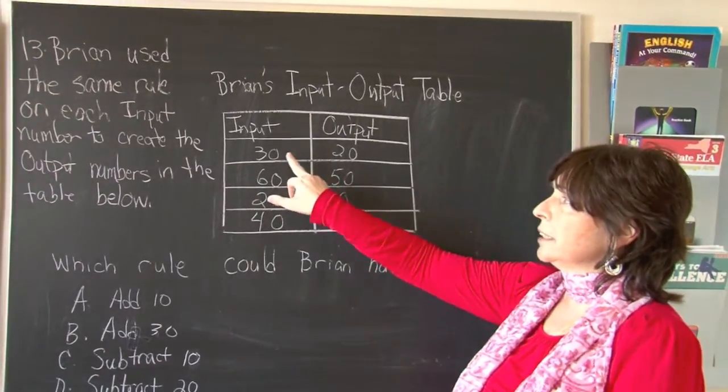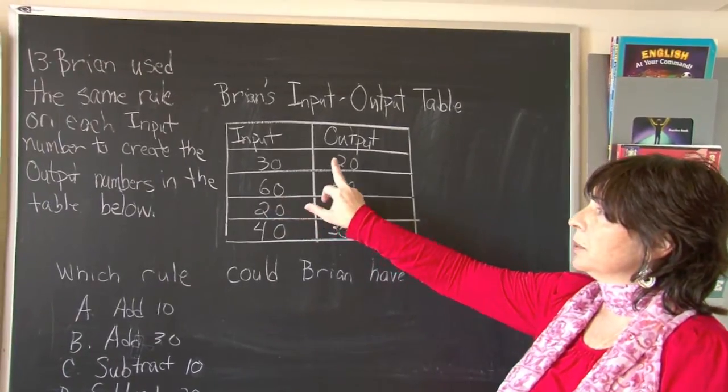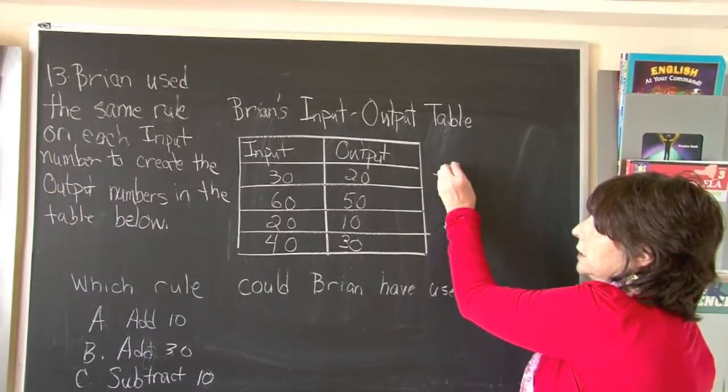If I subtract 10, it's easy to see that pattern. 30 take away 10 would give me 20. It seems like that works. Minus 10.